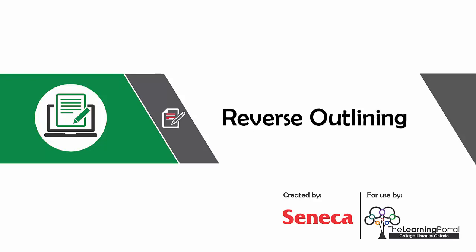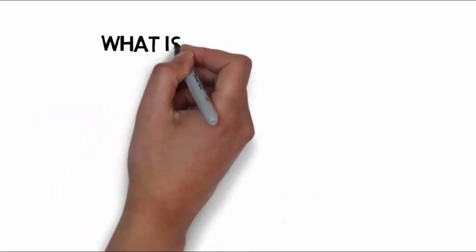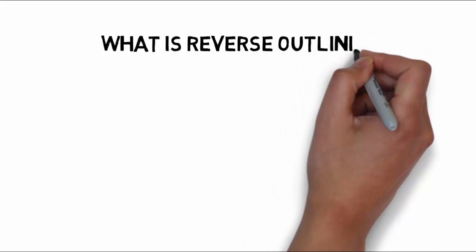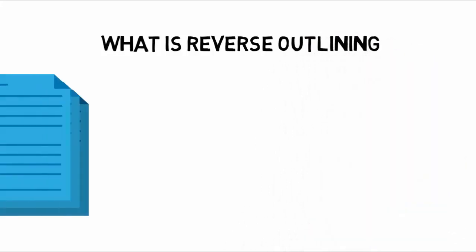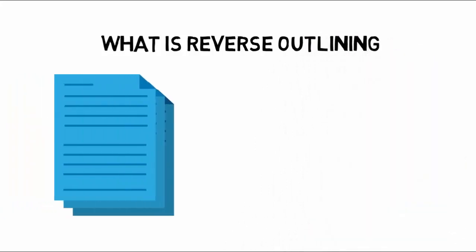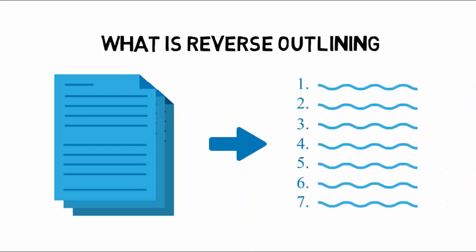This video will explain the reverse outline technique and how you can use it to revise your essays. Reverse outlining is a process of creating an outline from the draft of an essay. It is an effective way to ensure that the structure of your essay represents the main ideas you want to communicate to your reader in a logical manner. By removing the supporting ideas in your essay and reducing your draft back to your main ideas only, you can check your work to ensure it demonstrates the points you're trying to make. It can also help you analyze whether or not you need to add more supporting points or evidence.